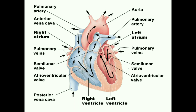Next is the coronary artery, which is present on the surface of the heart. Next is the septum — as mentioned earlier, the septum divides the heart into right and left parts.